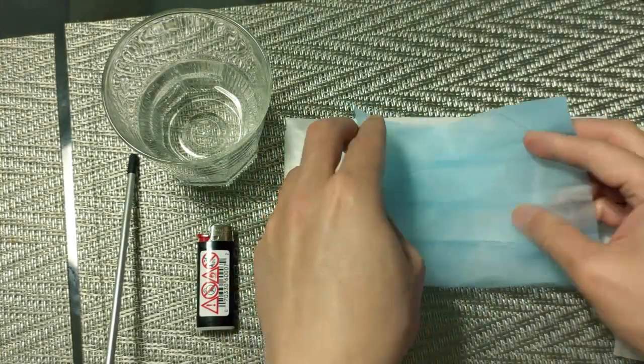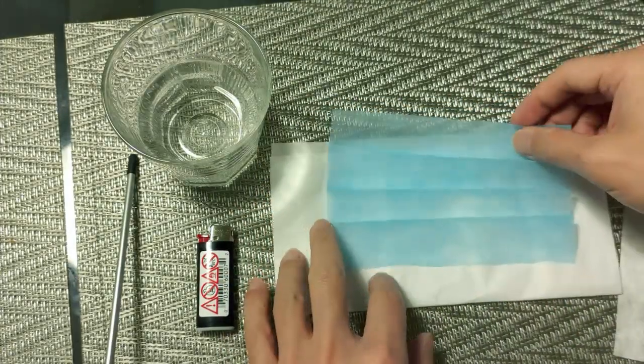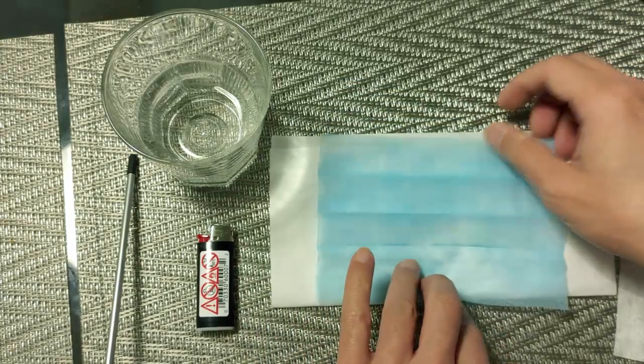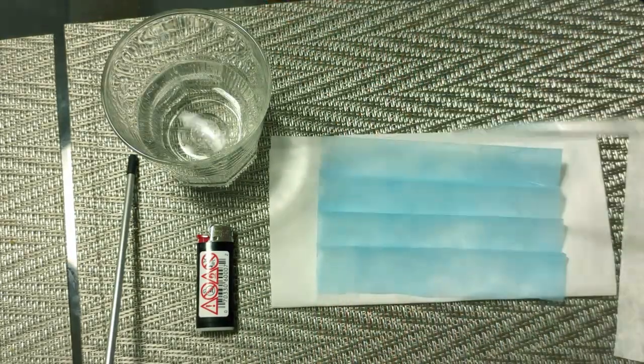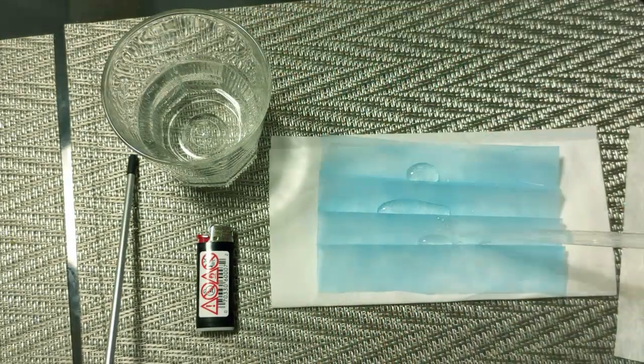The first test is on the outer layer against water. We put the outer layer on top of a tissue paper with its outer face facing up. Then we put on a fair amount of water to see if the water would go through.